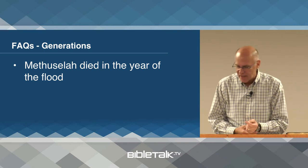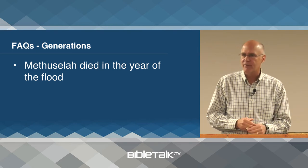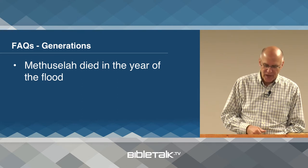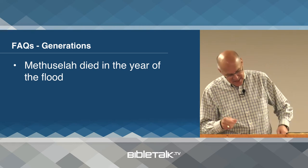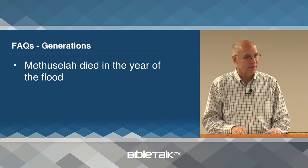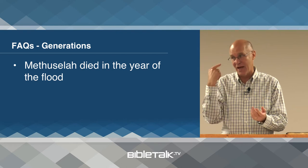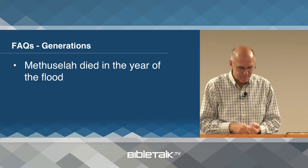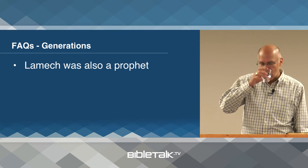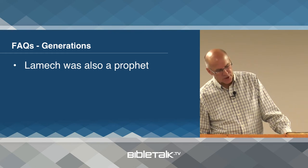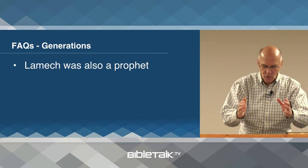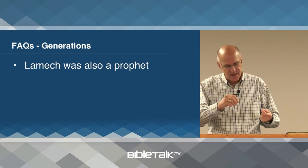Methuselah dies in the year of the flood. His name implies that God will act at the end of his life — 'when he dies, judgment.' He dies in the year of the flood as his name suggests. And Lamech was a prophet because he speaks concerning the future in regards to his own son Noah. Of all the children he bore, only Noah survived, and through Noah the promised seed would come. We always think of Noah as the guy in the boat, and that's true — but in a bigger sense, Noah is one of these patriarchs through whom the seed came.